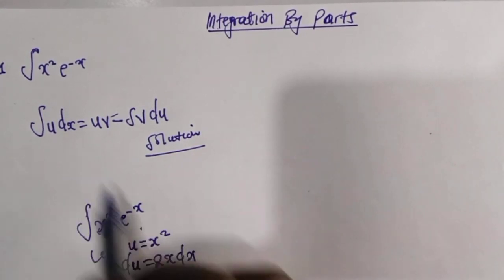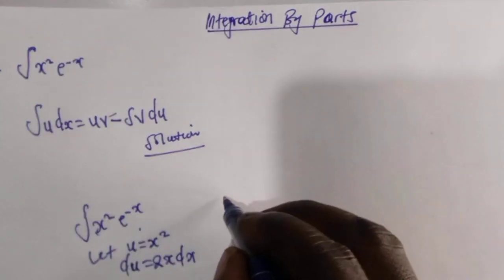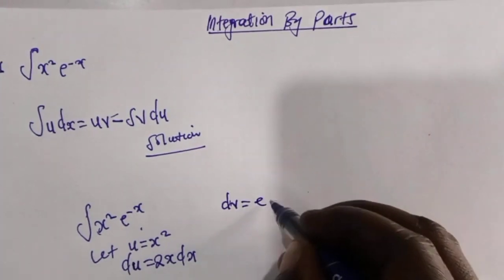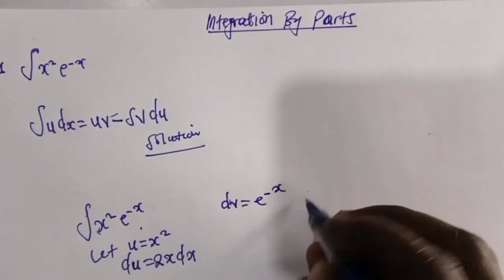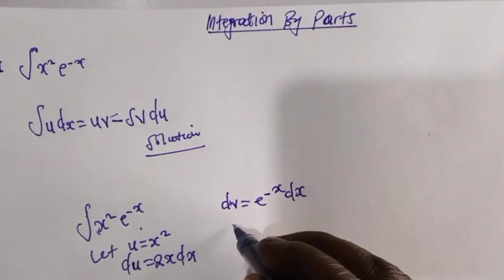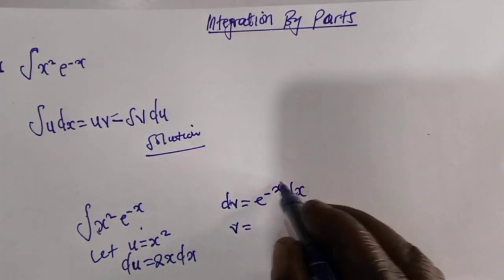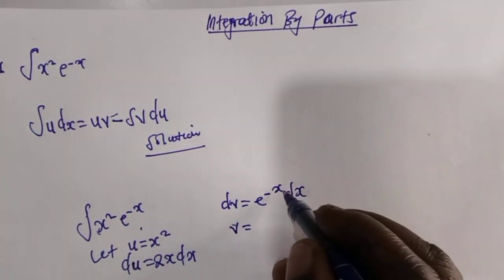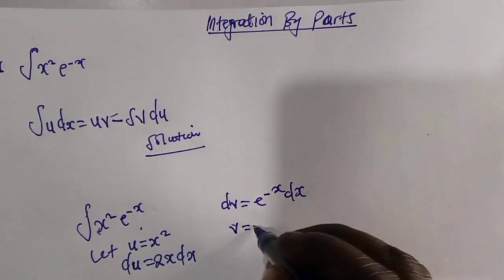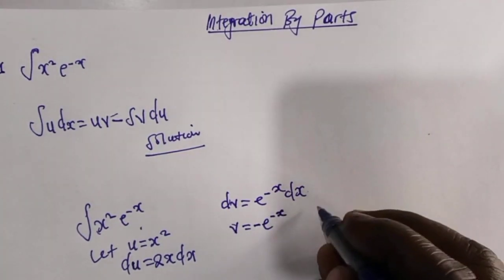For the second function, which is e to the power negative x, we set dv equals e to the power minus x dx. When you integrate this, you get v equals negative e to the power minus x.